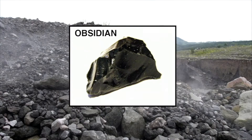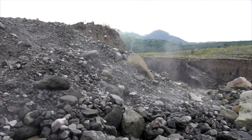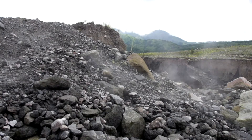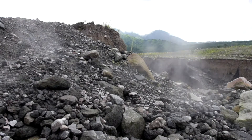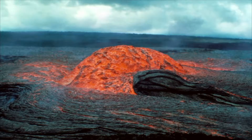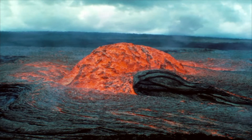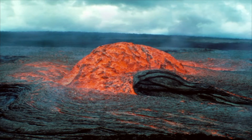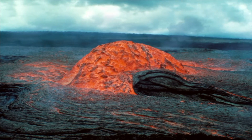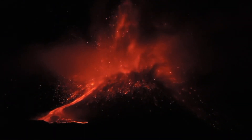Obsidian is a dark, glass-like volcanic rock. Lava cools and solidifies so rapidly that crystals do not have time to form. Andesite is an igneous rock with large and small crystals, referred to as porphyritic texture. Porphyritic rock forms by going through two phases. During the slow phase, large crystals grow slowly in magma. During the fast phase, a volcanic eruption produces the fine-grained matrix.